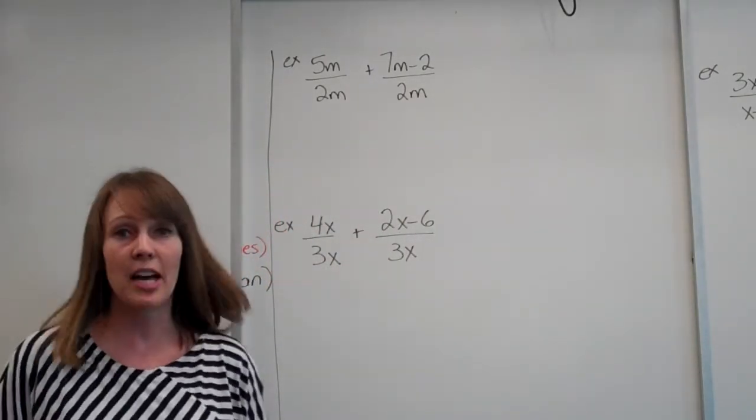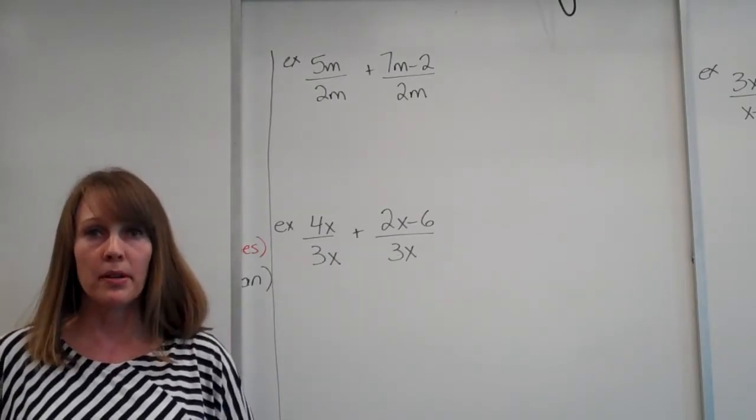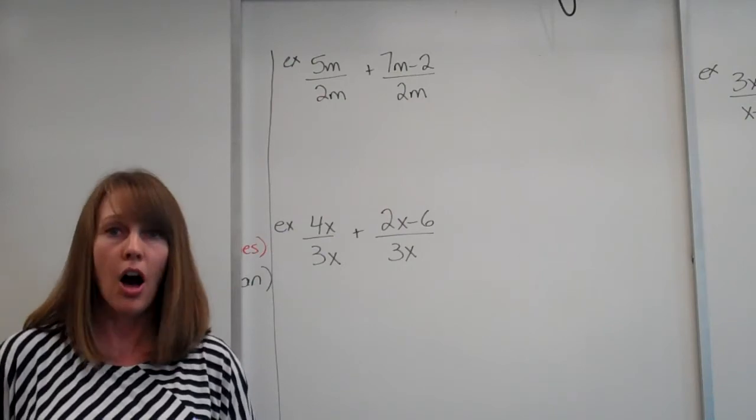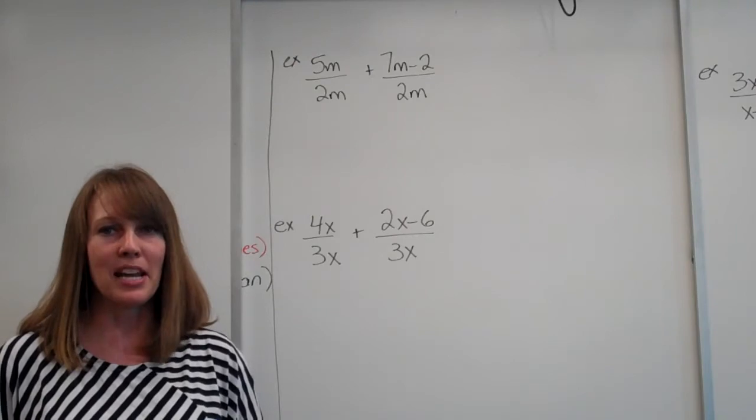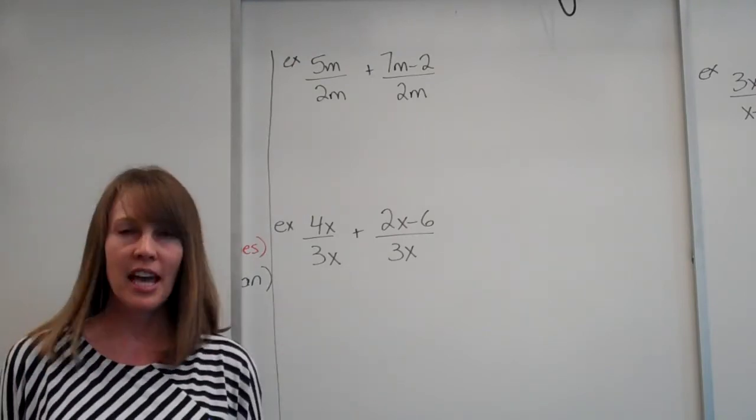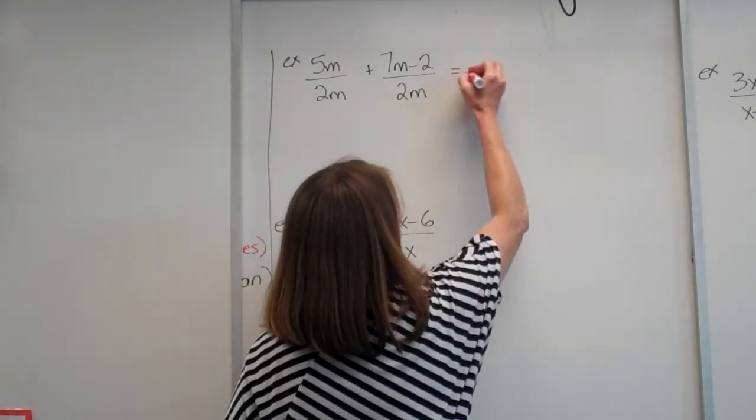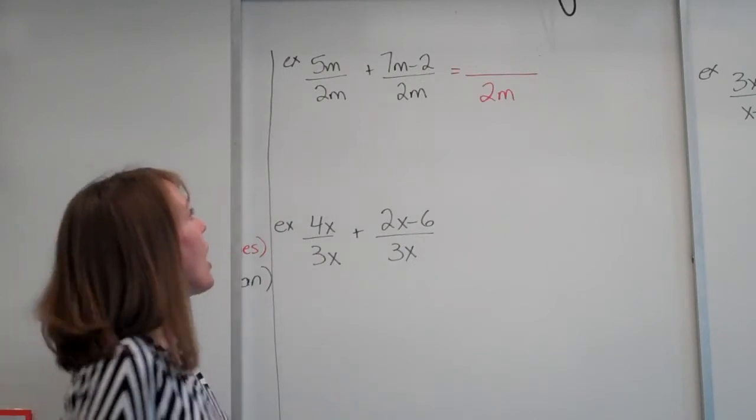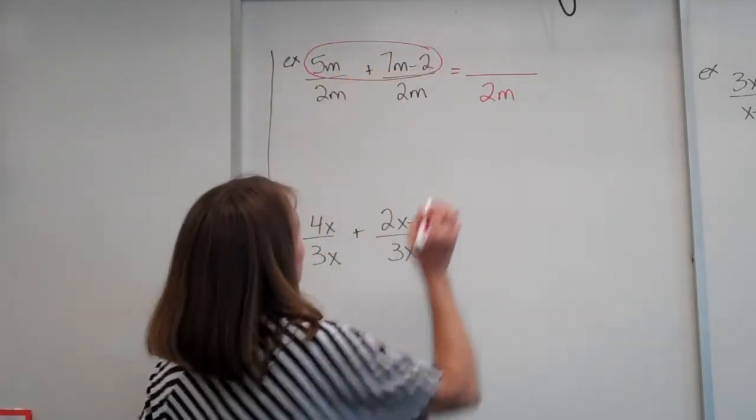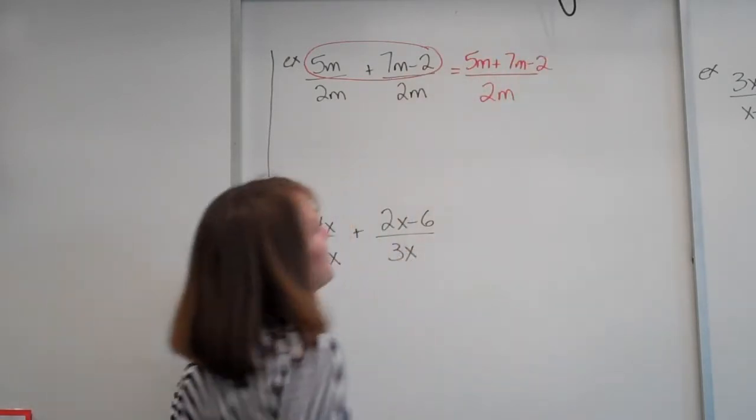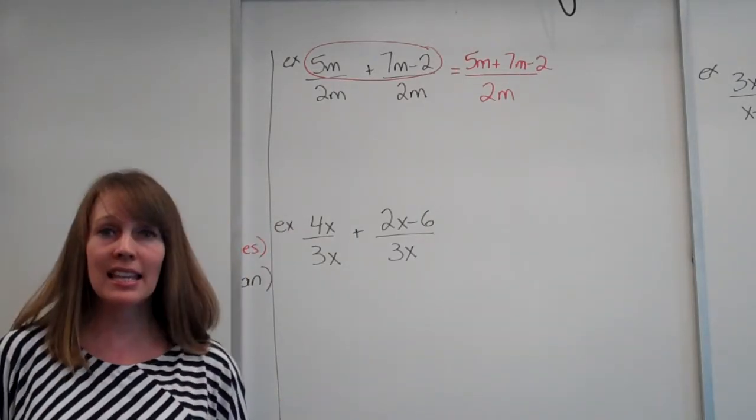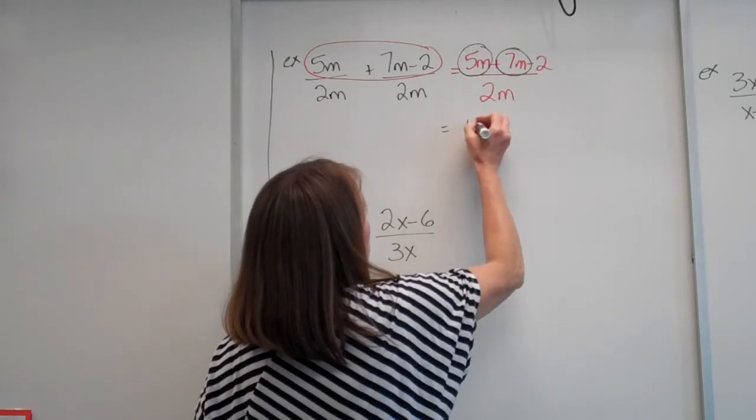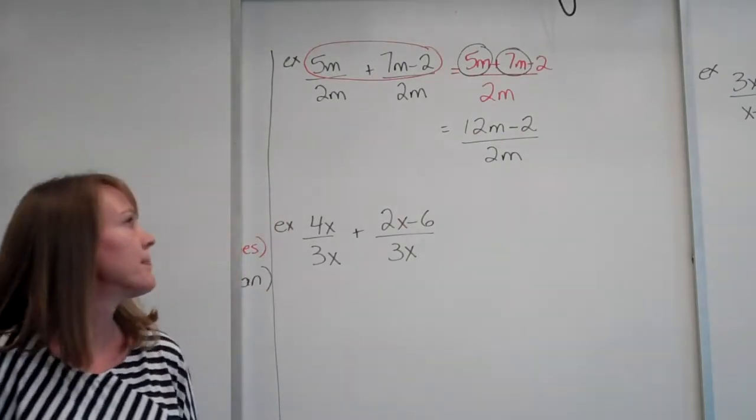Let's look at our examples. We're going to start with 5m over 2m plus 7m minus 2 over 2m. And you're like, oh wait, Mrs. Woolley, suddenly we got some m's in there, I don't know what to do. It's okay. You're looking at the denominators - are they the same? Yes, they are. That means that our common denominator is 2m. It doesn't change. We don't add the 2m's together. We're counting how many 2m's we have. So we're going to add the numerators together - 5m plus 7m minus 2. Is there anything that's a like term? Yes we can, we can add these m's. So now I have 12m minus 2 divided by 2m.